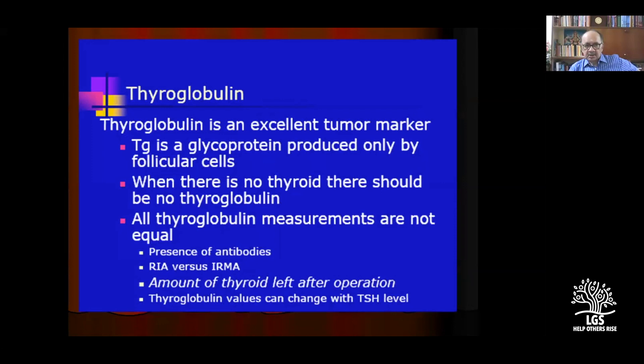After total thyroidectomy for malignancies, Graves disease, or MNG, thyroglobulin is an excellent tumor marker. Hemithyroidectomy is done when disease is absolutely confined to one lobe. When you have a hemithyroidectomy, you cannot reliably measure thyroglobulin, because the remaining lobe's thyroid tissue will show very high levels. Thyroglobulin is a glycoprotein, and when there is no thyroid tissue remaining, thyroglobulin should be absent.